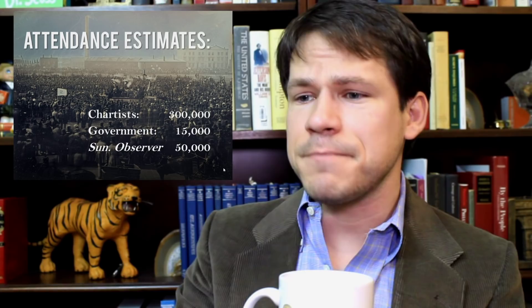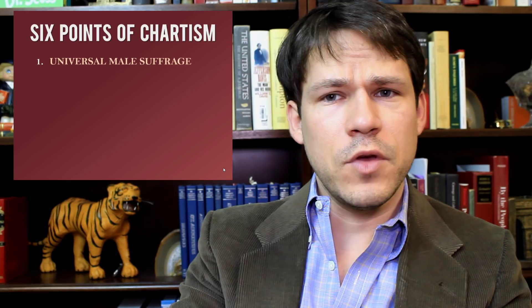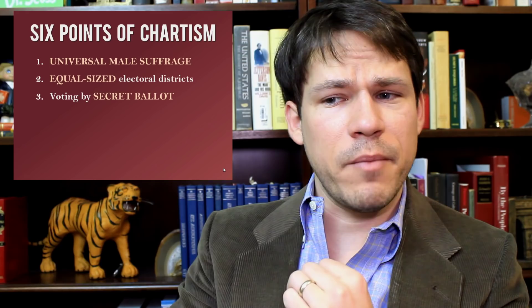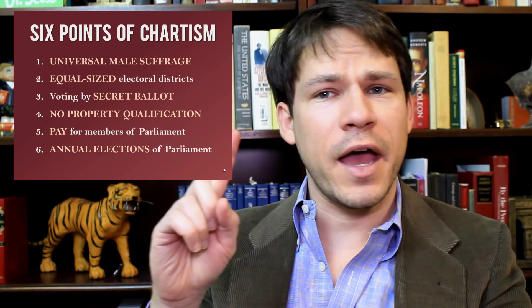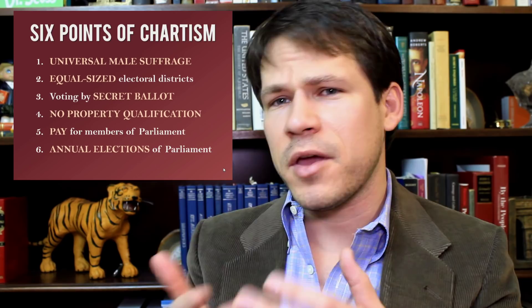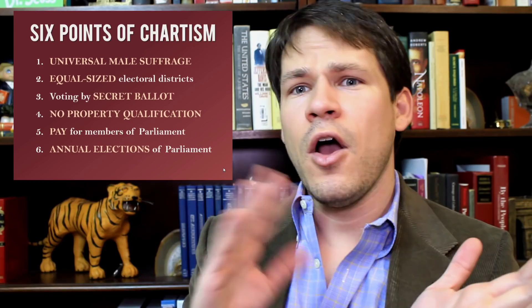To review, the six points of Chartism are: one, universal male suffrage; two, equal sized electoral districts; three, voting by secret ballot; four, no property qualification; five, pay for members of Parliament; and six, annual elections of Parliament. Keep in mind that points one through five have happened, but six has not — and it's probably good, because elected officials need to be able to govern without making every decision based on current public opinion.